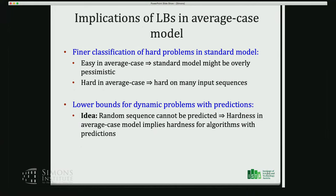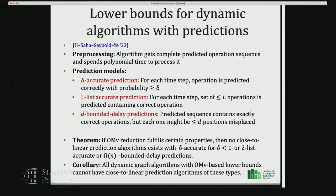The implication is a finer classification of hard problems in the standard model: some that were hard are now easy in the average case — suggesting the standard model was too pessimistic — while others are still hard in the average case, meaning they're hard on many input sequences. This last point has a further implication for algorithms with predictions: if a problem is hard for random input instances, there cannot be any useful prediction because you cannot predict the random sequence.